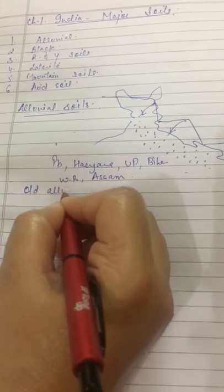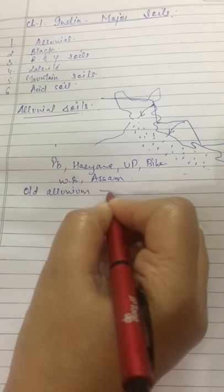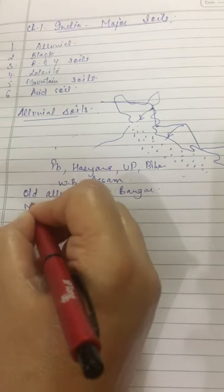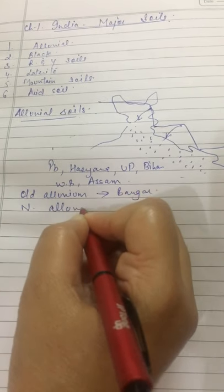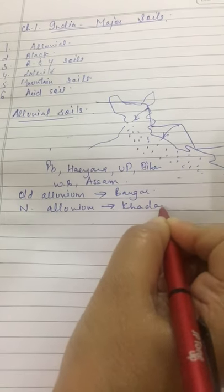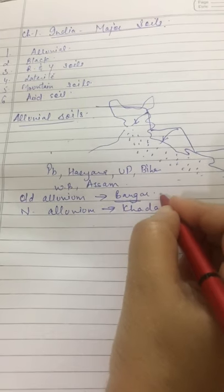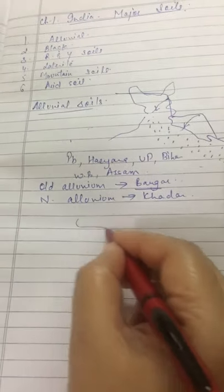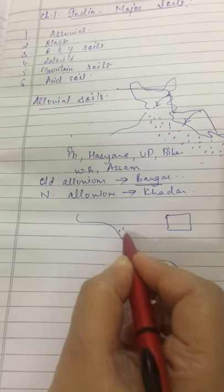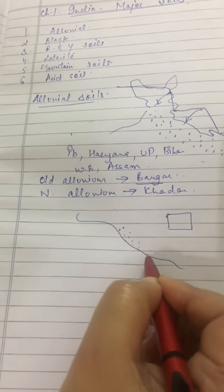This soil is divided into two categories, Old Alluvium, that means Bangar and New Alluvium, that means Khadar. Old Alluvium is found away from the river. Suppose this is the river. Old Alluvium is found here and New Alluvium is found near the river.